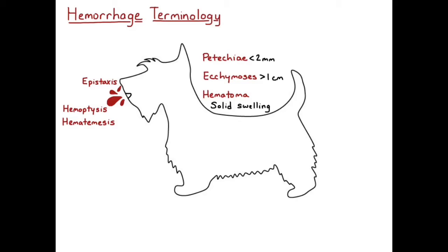Hemorrhage can also occur into a third space, so into the cavitary spaces. If there's hemorrhage within the pleural space, that's called hemothorax. Hemorrhage within the pericardial space is called hemopericardium, and hemorrhage into the peritoneal space is called hemoabdomen.